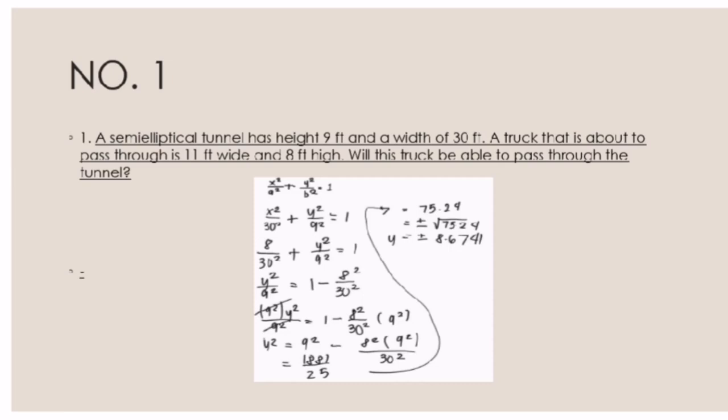The equation we are using is x squared over a squared plus y squared over b squared equals 1. Substituting the values, it will become x squared over 30 squared plus y squared over 9 squared equals 1.